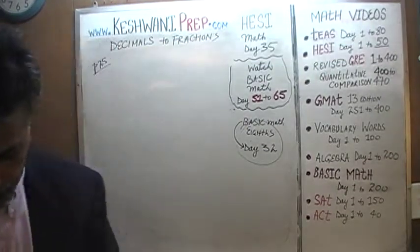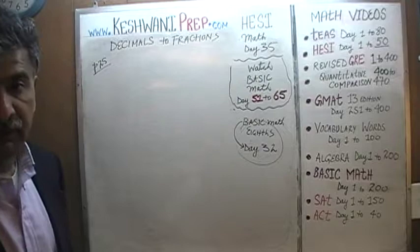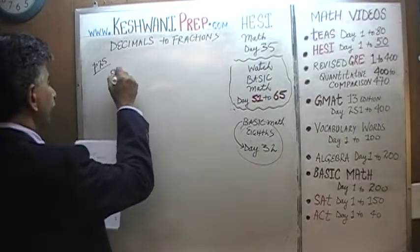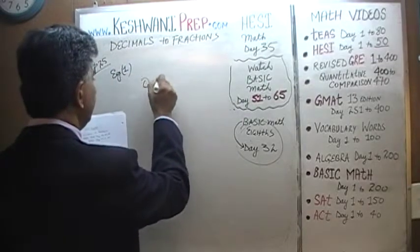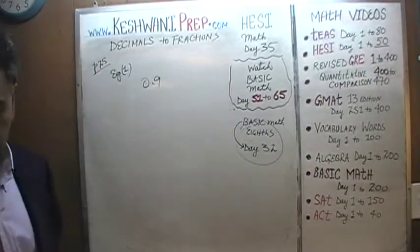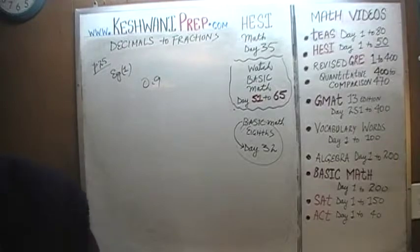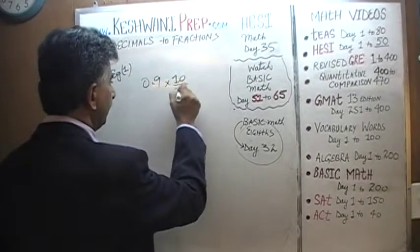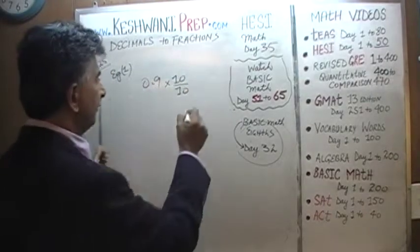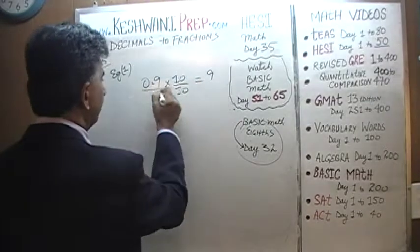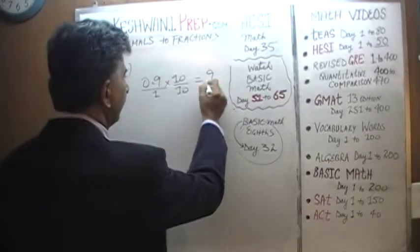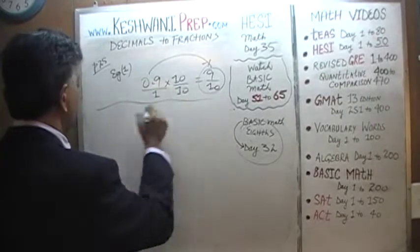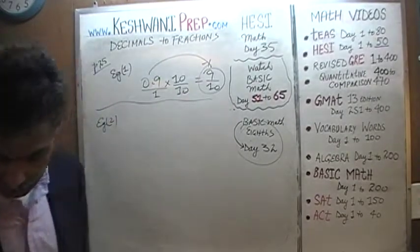Number one. These are four examples on page number 25. Example number one: 0.9. We are being asked to convert this from decimals to fractions. If you were to multiply top and bottom by ten, 0.9 times ten is just nine, and one times ten is ten. So 0.9 is nine tenths — of course, no big news there.